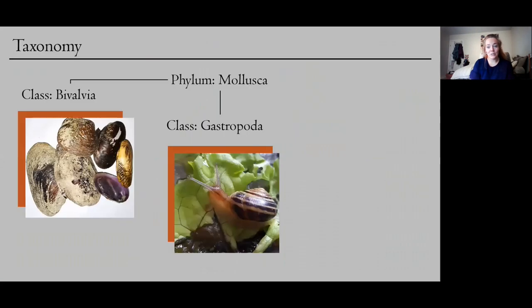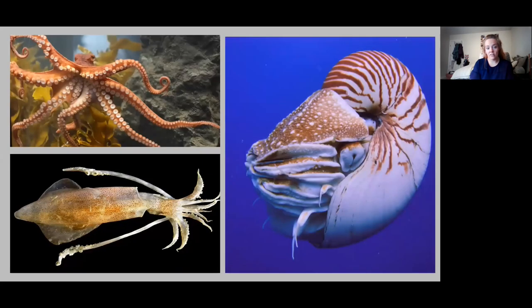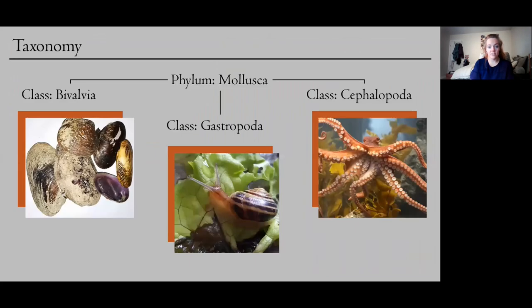And then maybe most surprisingly, the last major class is the cephalopods. Sometimes you forget that these guys are actually related to the mussels and snails because they include things like the octopus, the squid, nautilus, and cuttlefish. So these are our three major classes of the molluscan phylum.